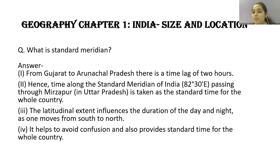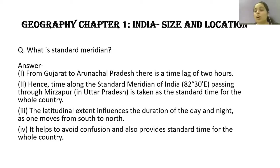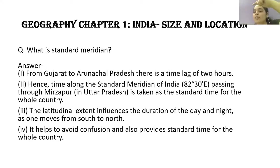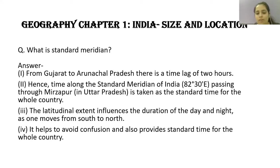This latitudinal extent influences the duration of day and night as one moves from south to north. The equator is the most heated place. If you are at the equator, you are directly facing the sun. As rays go away from the equator towards the poles, there is less sunlight, so the duration of day becomes short and night becomes longer. Standard Meridian helps avoid confusion and provides standard time for the whole country.